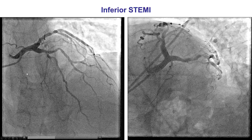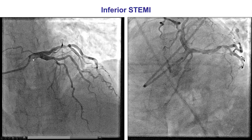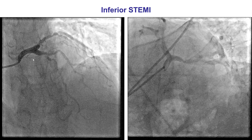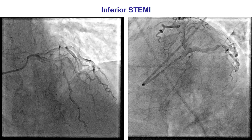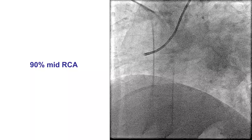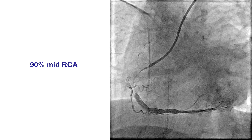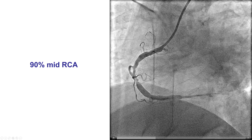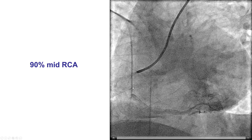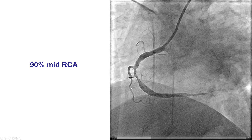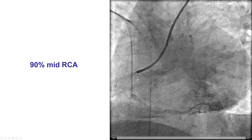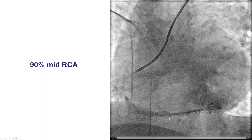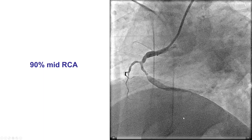In this particular case, we engaged the left main and did not find any culprit lesions, although there was disease in the LAD and the circumflex. On the right coronary artery, there was a significant lesion — a 90-plus percent lesion in the mid-right coronary artery — that appeared to be the culprit lesion, although interestingly, there was TIMI-3 flow at baseline.